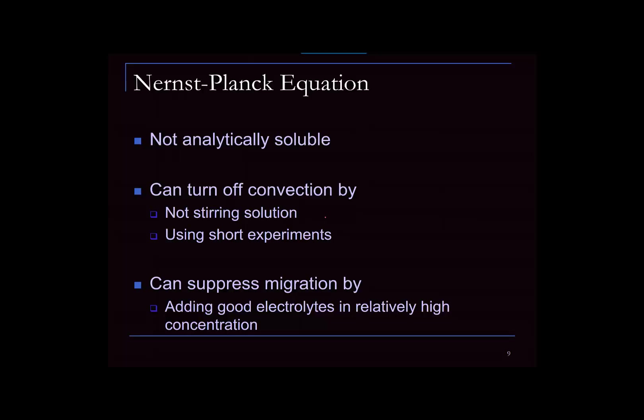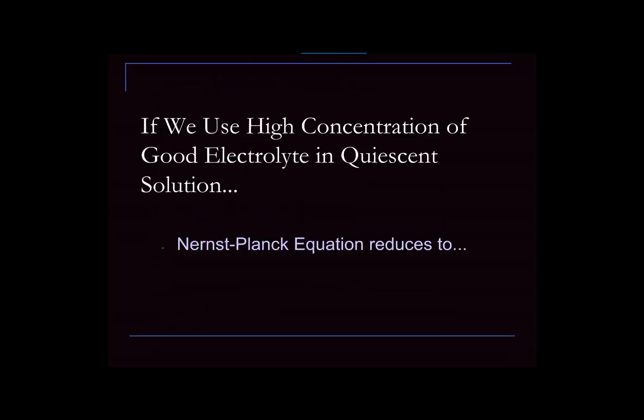So we want to set up experiments to eliminate one or more components experimentally. We've already talked about how we can turn off convection: practically, by not stirring the solution and using short experiment times. We can also suppress migration. By choosing good electrolytes — like sodium chloride or potassium nitrate — and adding them at high concentration, your analyte will primarily move by diffusion to the electrode surface, with the migration term dominated by the electrolyte contribution. So if we eliminate convection and migration, we're left with one term.